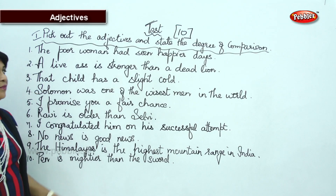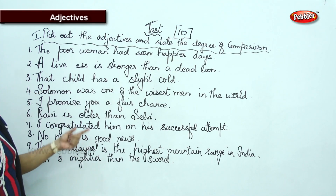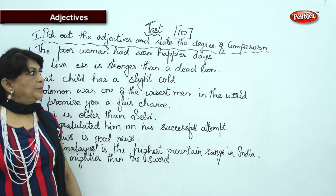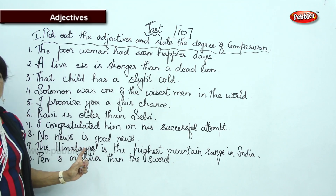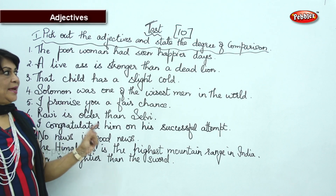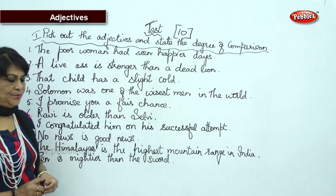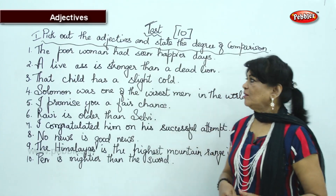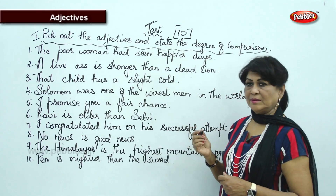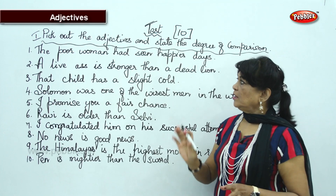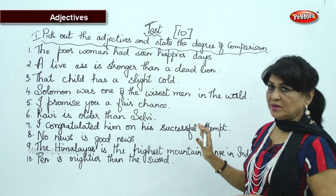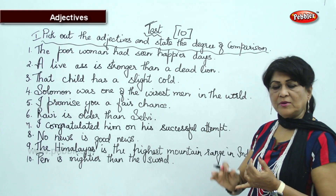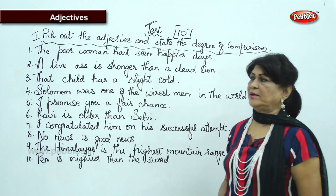I have given you ten sentences and in all ten sentences we have adjectives in different degrees of comparison. You have to underline the adjective and state what degree it belongs to — whether positive degree, comparative degree, or superlative degree.